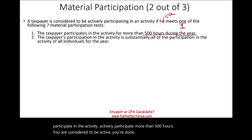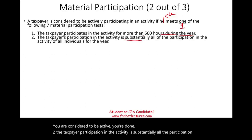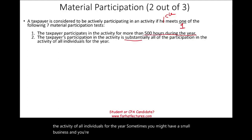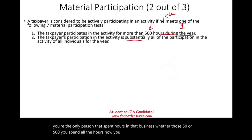Test two: the taxpayer's participation in the activity is substantially all the participation of all individuals for the year. Sometimes you might have a small business and you're by yourself and don't spend 500 hours, but you're the only person spending hours in that business. Whether it's 50 or 500, if you spend all the hours, you are considered active — because if you are not running it, who is?